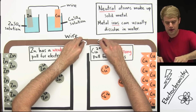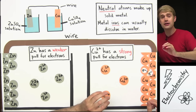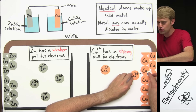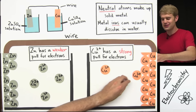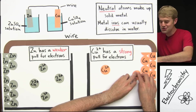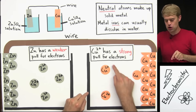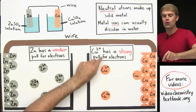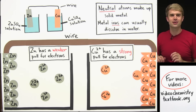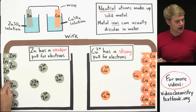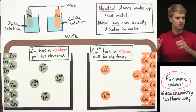These electrons make their way down the wire to the copper. One of the Cu2+ ions, which really wants electrons, comes over and two electrons are added to it. Gaining these two electrons gets rid of the 2+ charge on the copper, turning it into a neutral atom. Since neutral atoms make up solid metal rather than dissolving in solution, this copper atom becomes part of the solid copper metal. That's where the electron movement through the wire comes from.